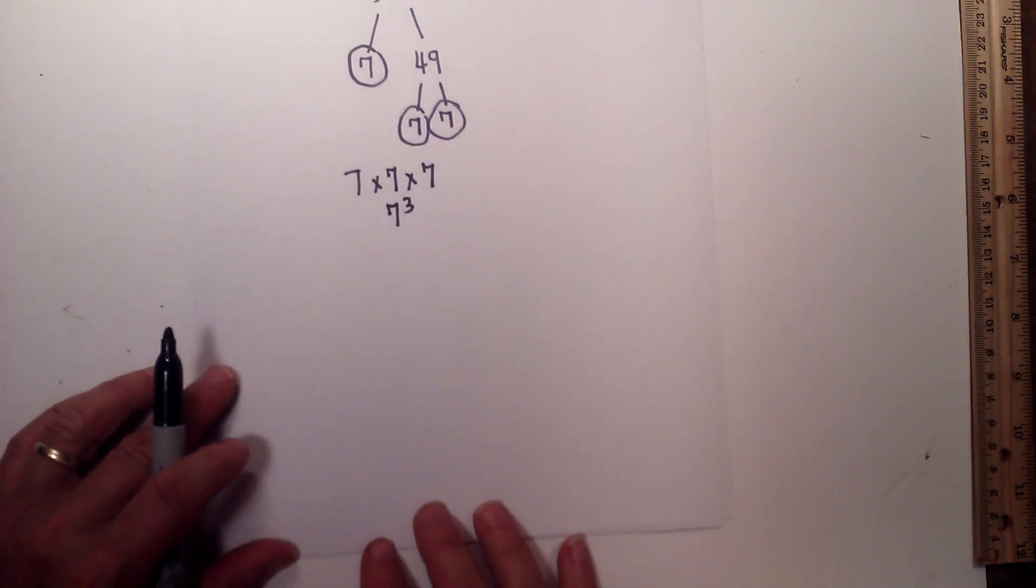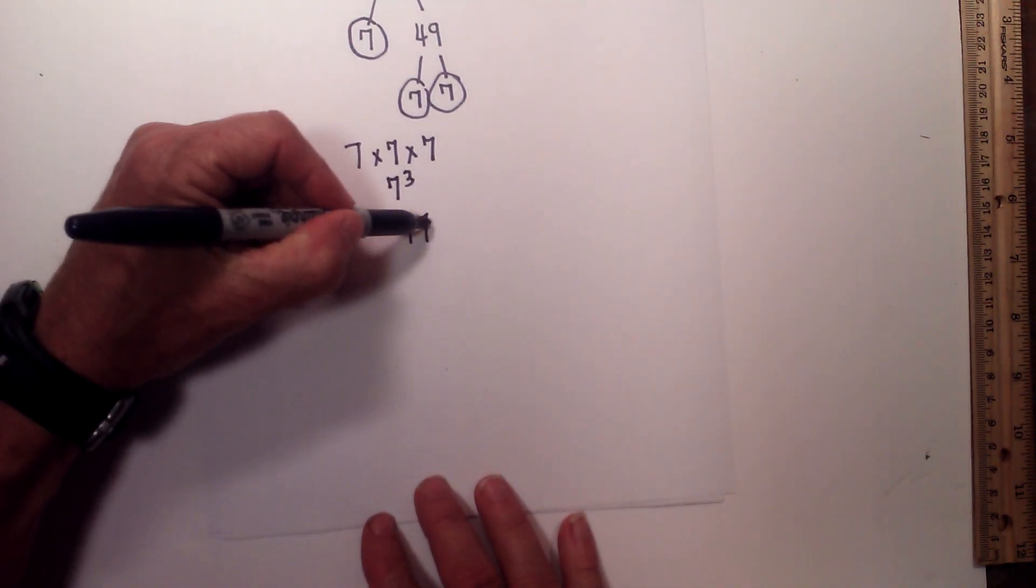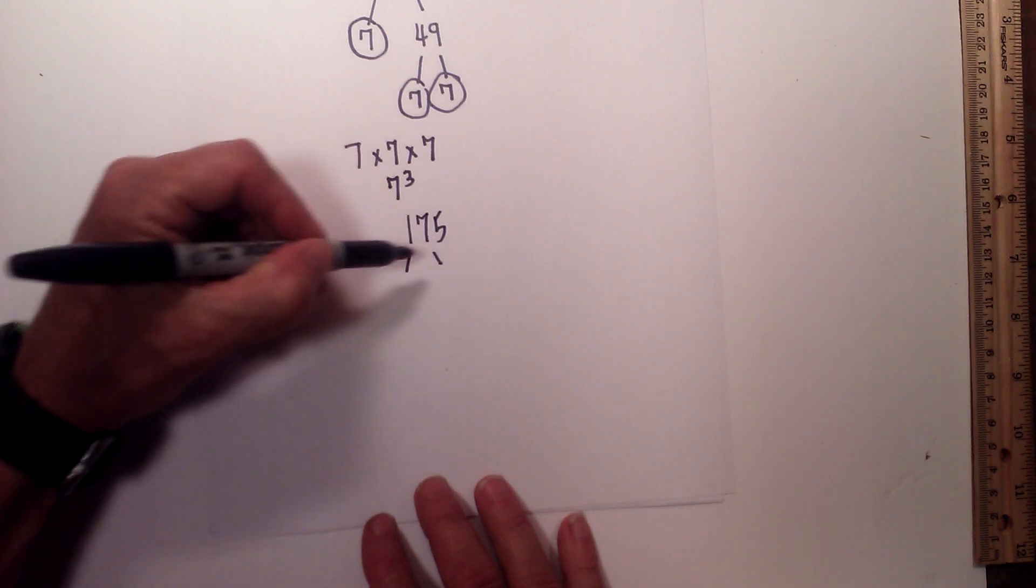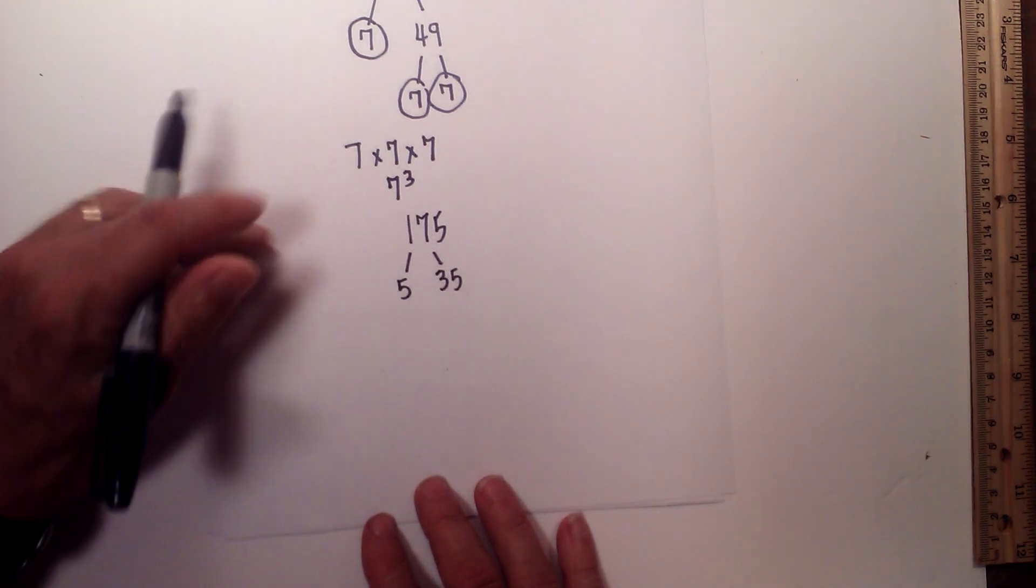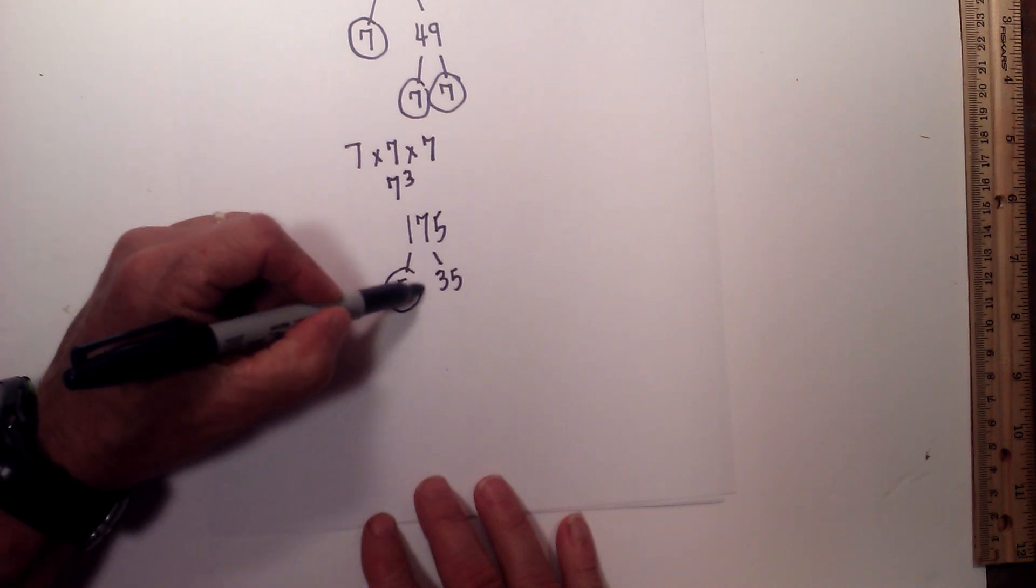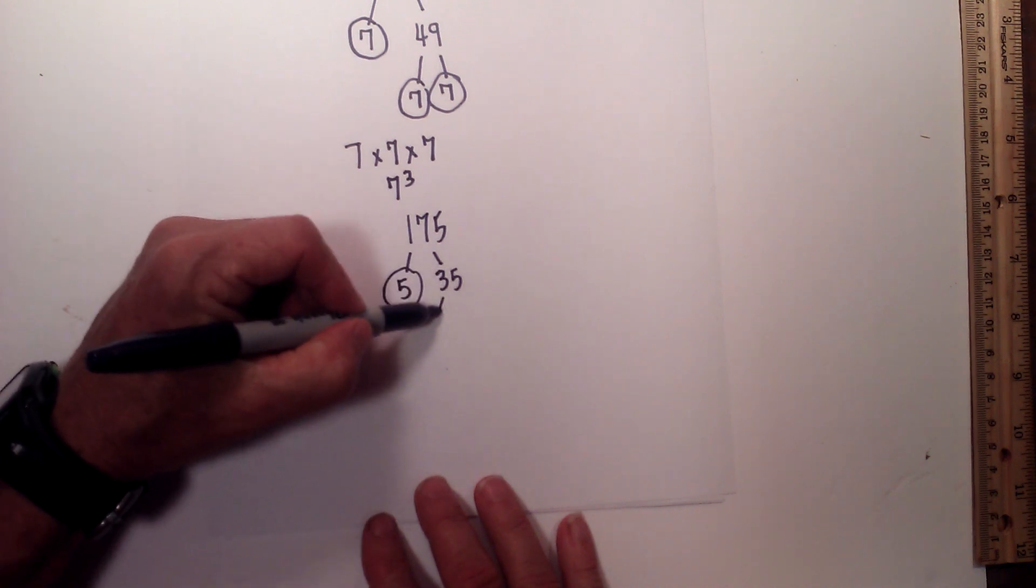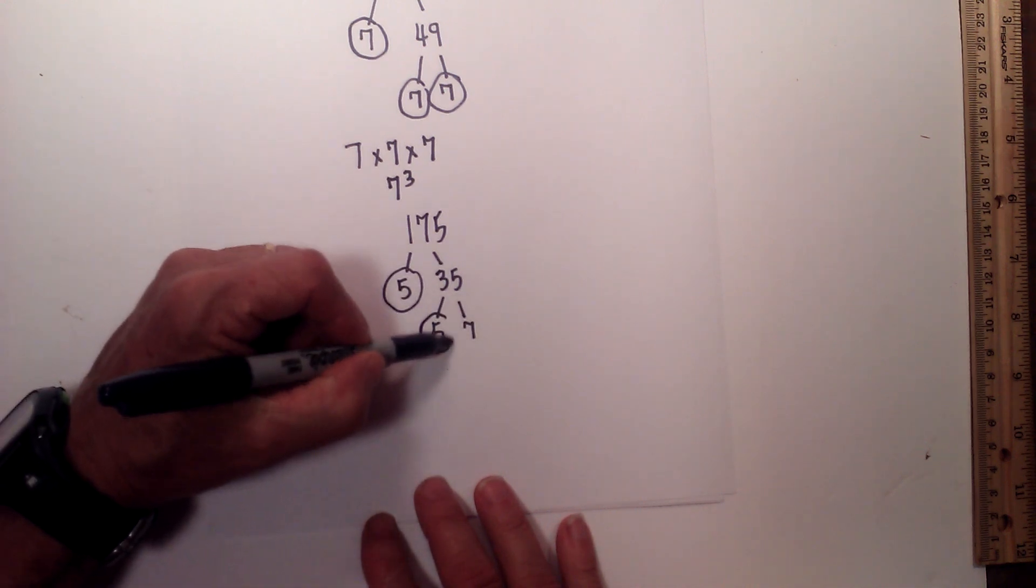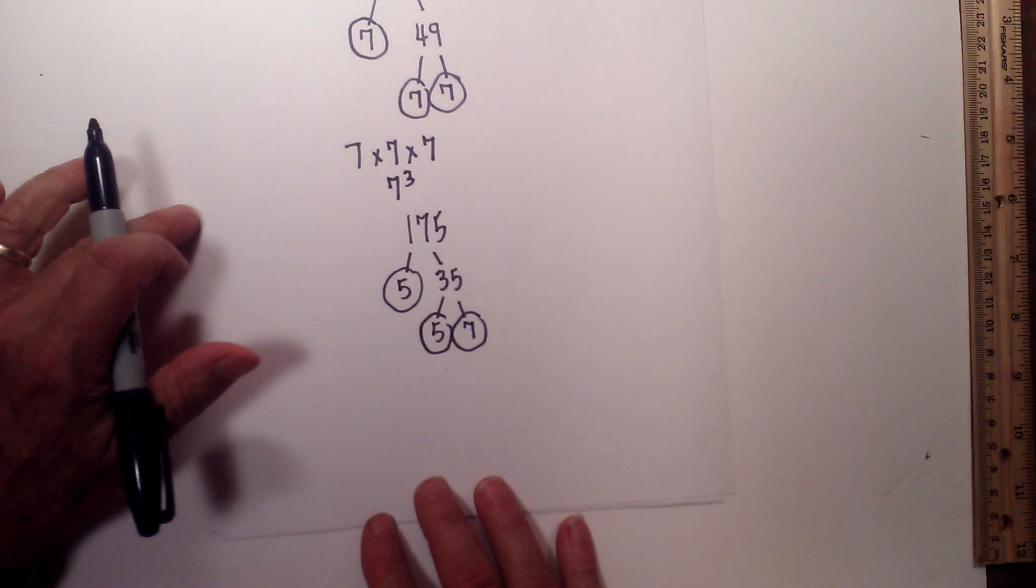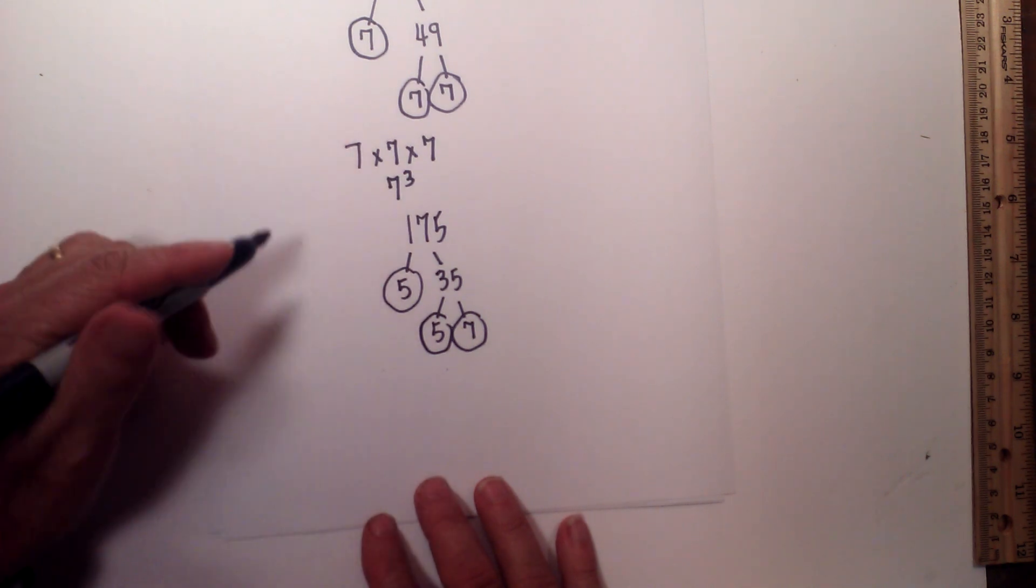Now how about 175? I will start with 5 times 35. I will circle the 5 because it is prime. 5 times 7 equals 35. I will circle the 5 and 7 because they are prime.